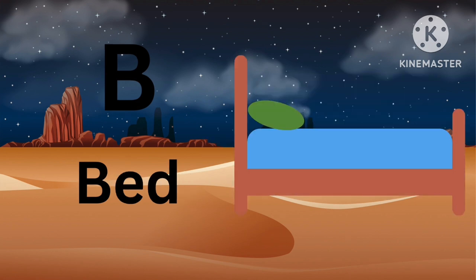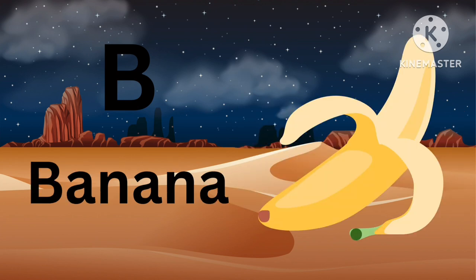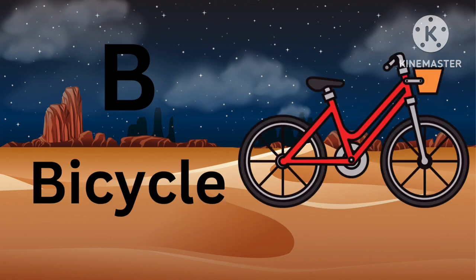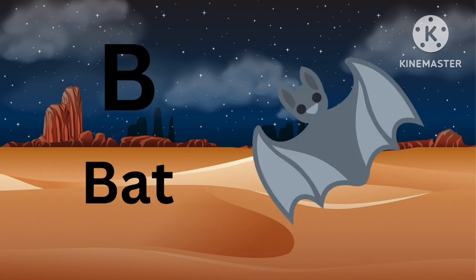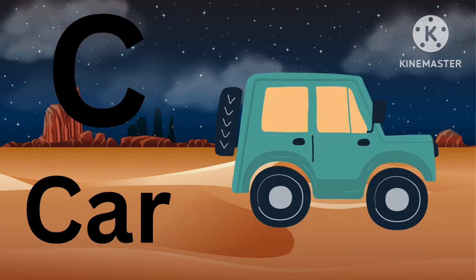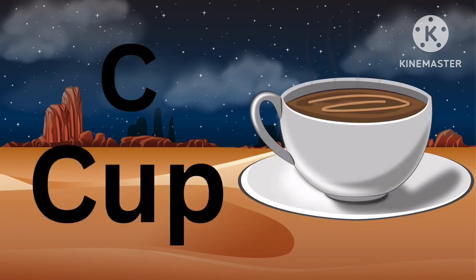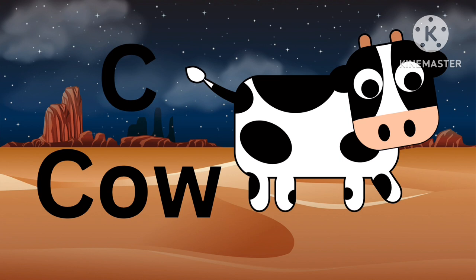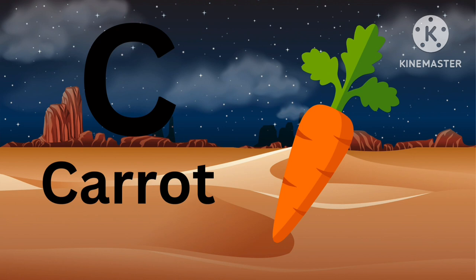B for Ball, B for Bus, B for Bed, B for Banana, B for Bicycle, B for Bat. C for Cat, C for Car, C for Cup, C for Cow, C for Carrot.